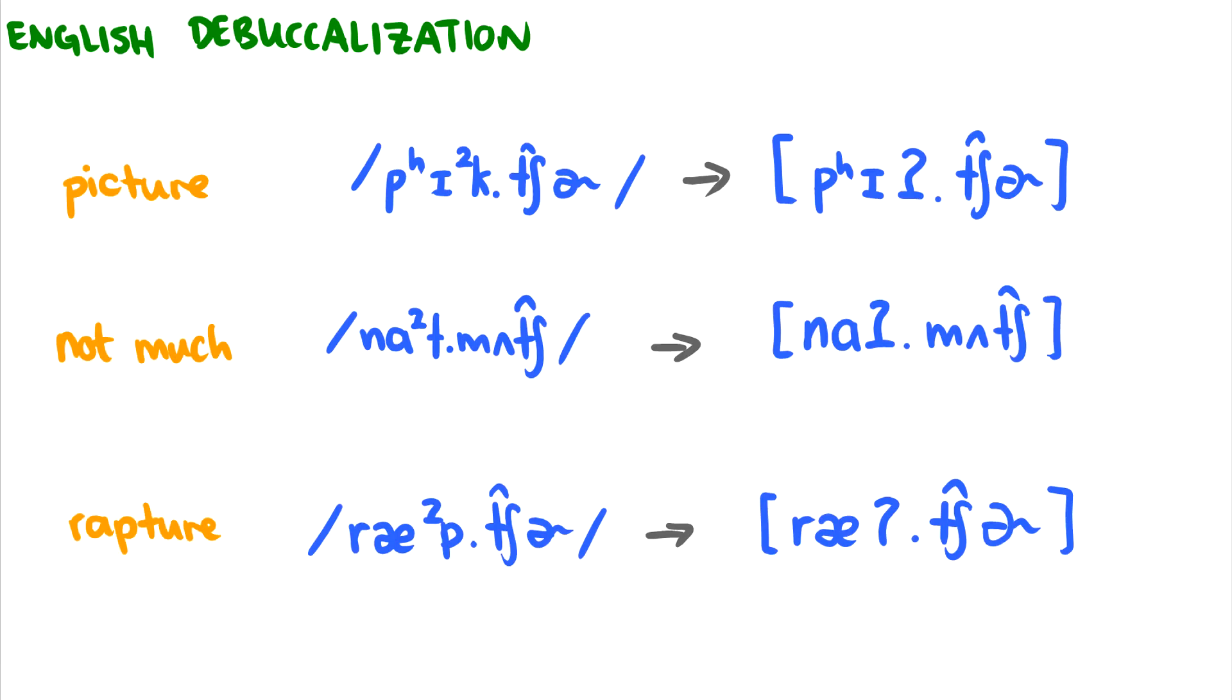The first one I want to look at is called English debuccalization. This is when you have these pre-glottalized stops that just become glottal stops. So for instance, instead of 'picture' you might say 'picture', or instead of 'not much' you might say 'not much', and just completely get rid of that pre-glottalized place altogether.